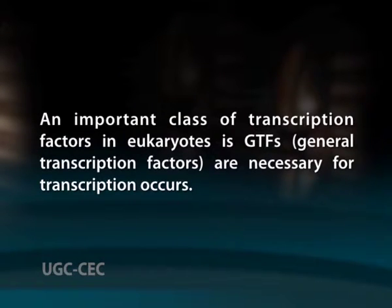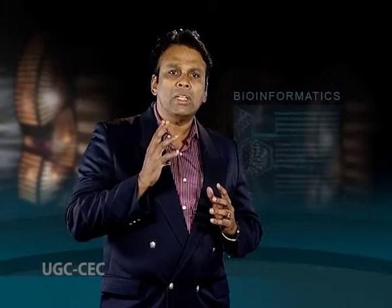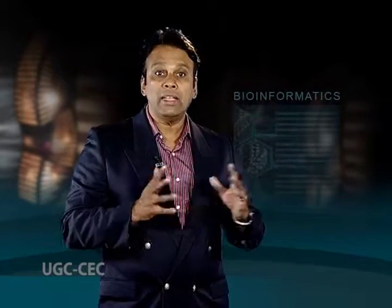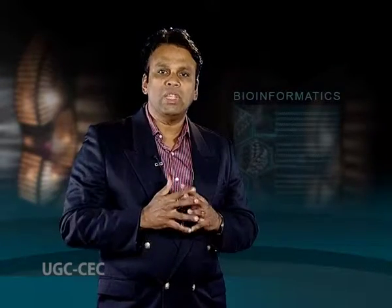An important class of transcription factors in eukaryotes is GTFs — general transcription factors — and they are necessary for transcription to occur. Many of these GTFs are part of the large transcription pre-initiation complex, in short called PIC, that interacts with RNA polymerase directly but do not actually bind DNA. The most common GTFs are TF2A, TF2B, TF2D, TF2E, TF2F and TF2H. The PIC binds to promoter regions of DNA upstream of the gene that they regulate.